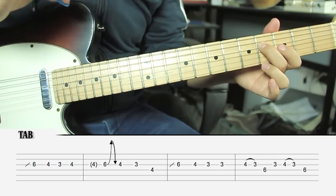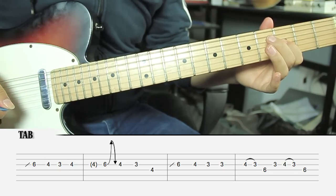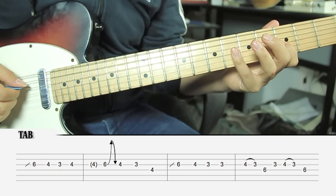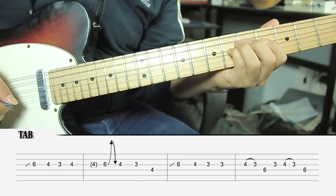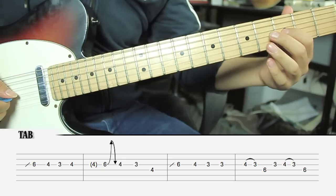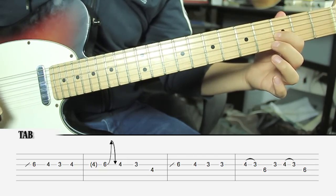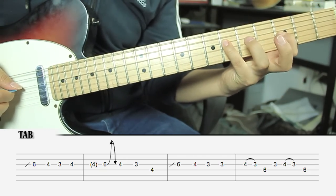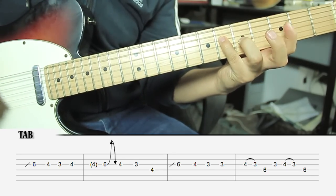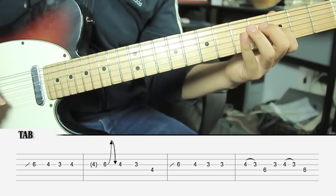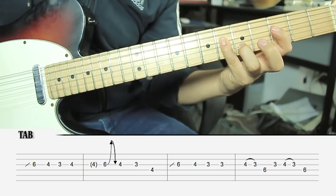Then we do something very similar. The beginning is the same and then we do this. What we do is Bb pull-off from B to Bb, then we go to G#, and we repeat.